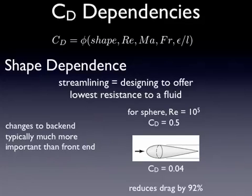The reason the back end is so important is that at the front end we're going to have high pressure and there's nothing we can really do about it. A common misconception is that you want a pointy front so the object cuts through the fluid — that's just not true. Drag is dominated by the pressure distribution, not shear force. It's about creating a favorable pressure distribution. Even with a pointy front, you still have the same stagnation point. But on the back end, you can really affect how the fluid flows around the object and save yourself considerable drag.